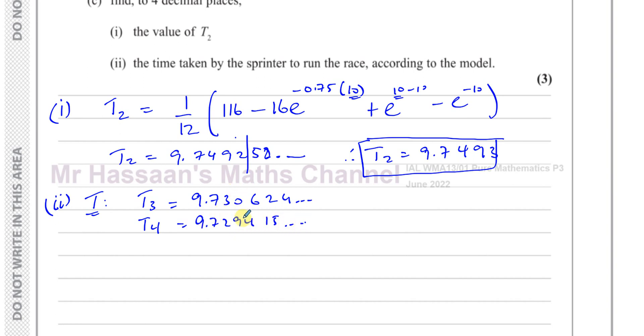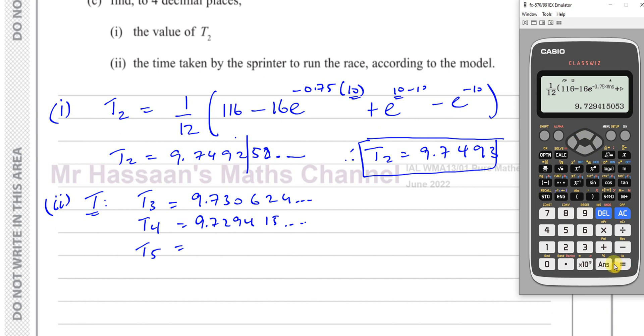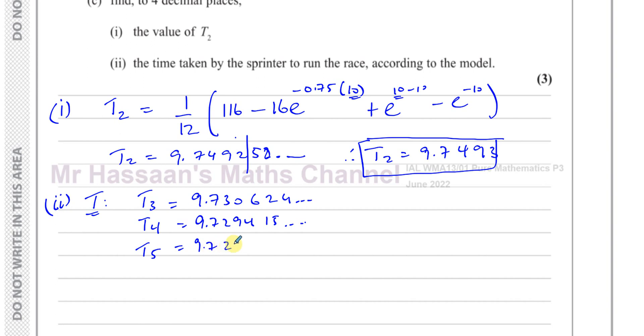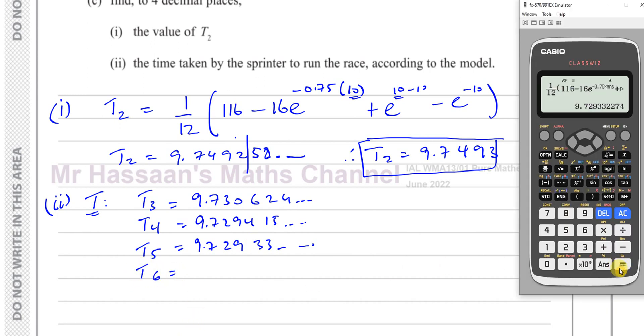So as you can see, it's changing. But what's going to happen is the numbers are going to start settling to a particular value. And when it gets settled up to 4 decimal places, I will stop. So I'm going to press equals again. So now it's going to substitute this value back into the expression. So as you can see, it's starting to settle down. I've got 9.72933.